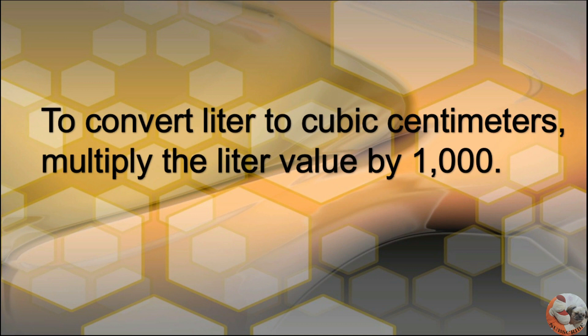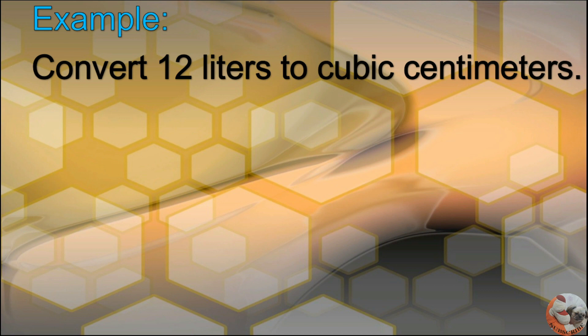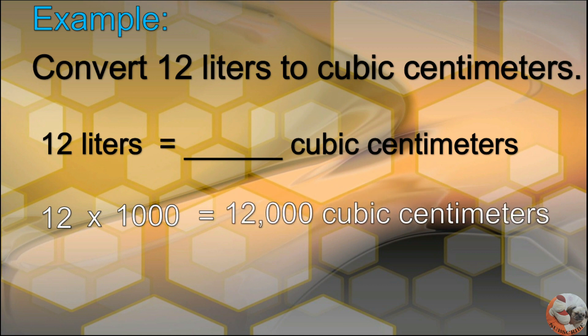To convert liters to cubic centimeters, multiply the liter value by 1,000. Example: convert 12 liters to cubic centimeters. Multiply 12 by 1,000, which equals 12,000 cubic centimeters. So 12 liters is equal to 12,000 cubic centimeters.